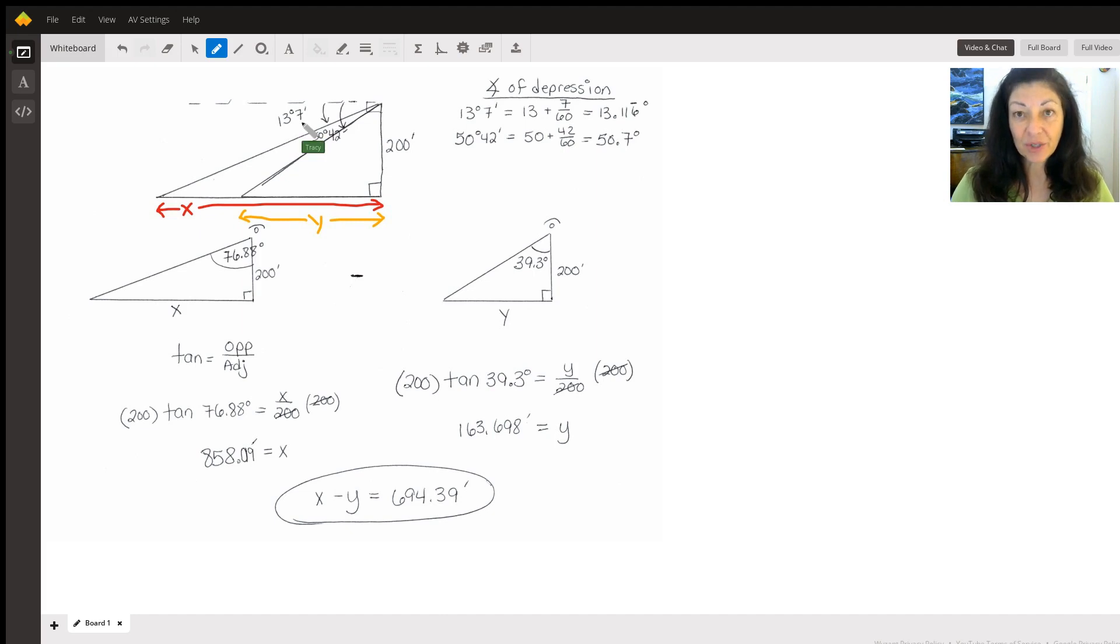There's 60 minutes in one degree, so you're going to divide 7 by 60 and add that back to the 13 degrees to get 13.116 repeating for the angle of depression.